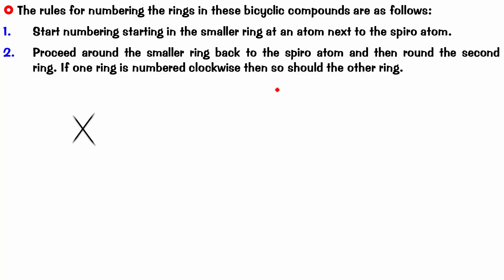Try numbering this one. Now, this is the spiro atom. So, one has to be adjacent to that in the smaller ring. One, two, three, four. Anticlockwise, five, six, seven, eight. This is the way the numbering is done.